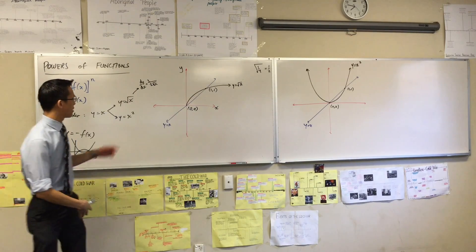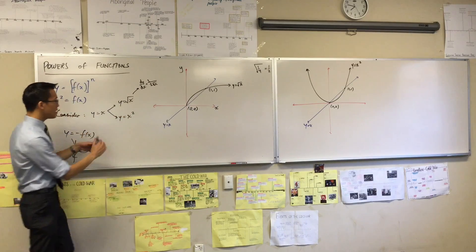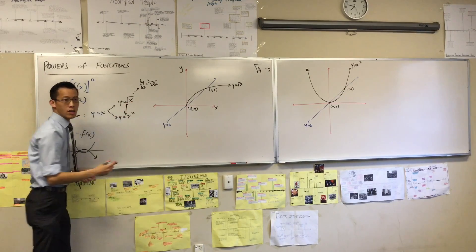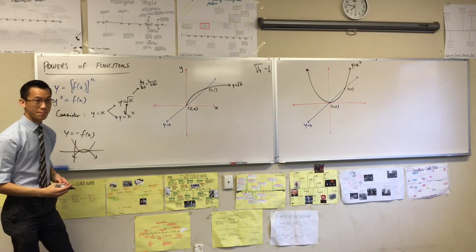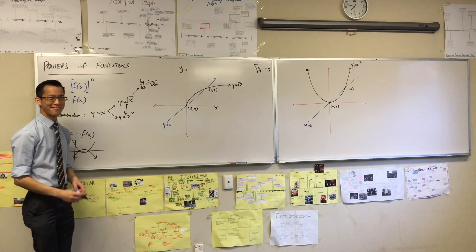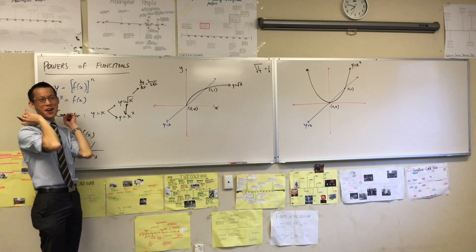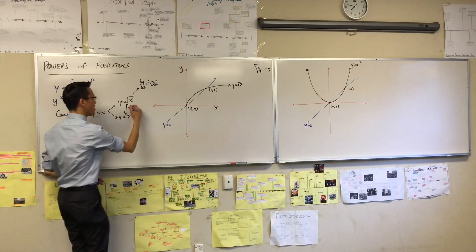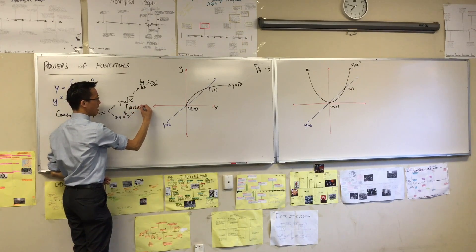But the other thing is that square root of x and x squared, these two themselves have a relationship with each other. What do we call these guys? It starts with an I. Any word that starts with I in maths. These are inverses of each other, are they not?